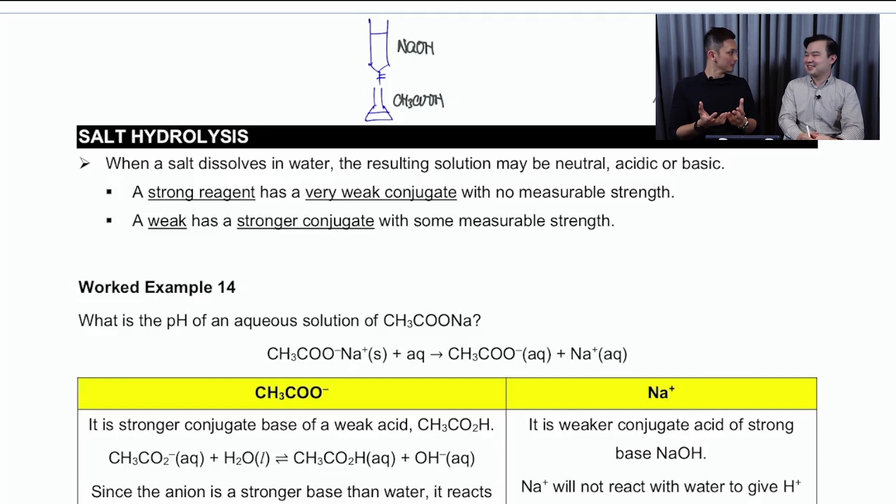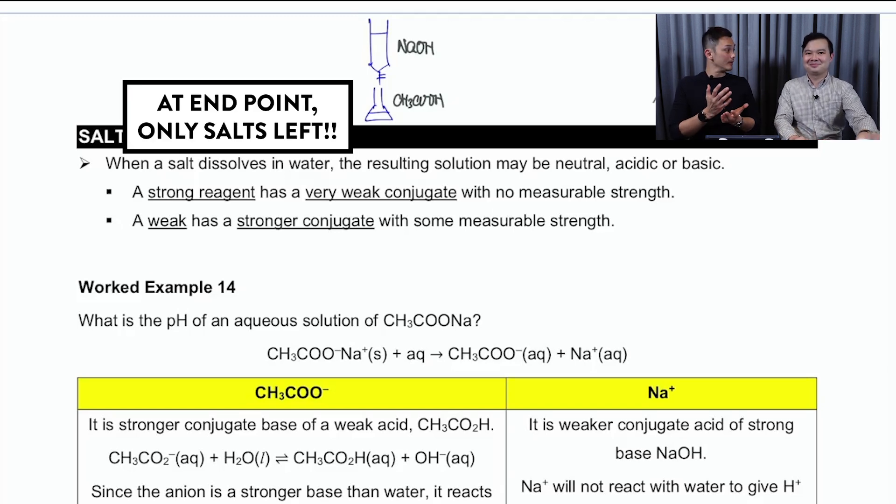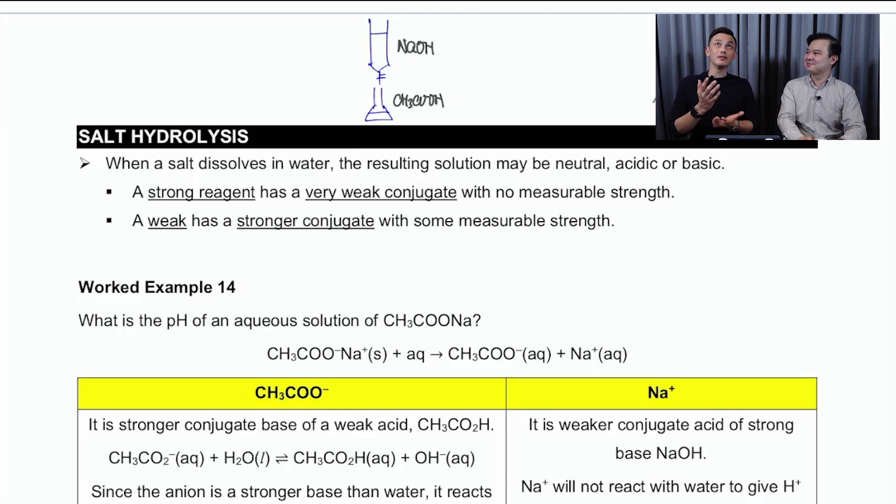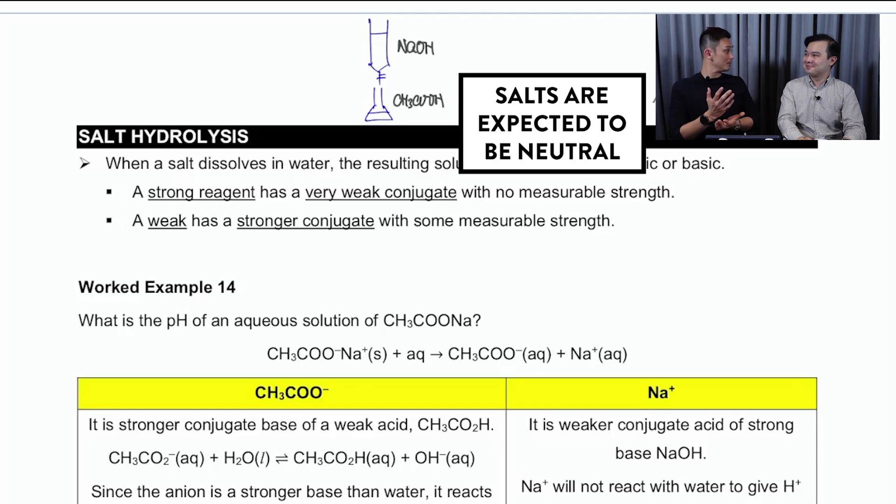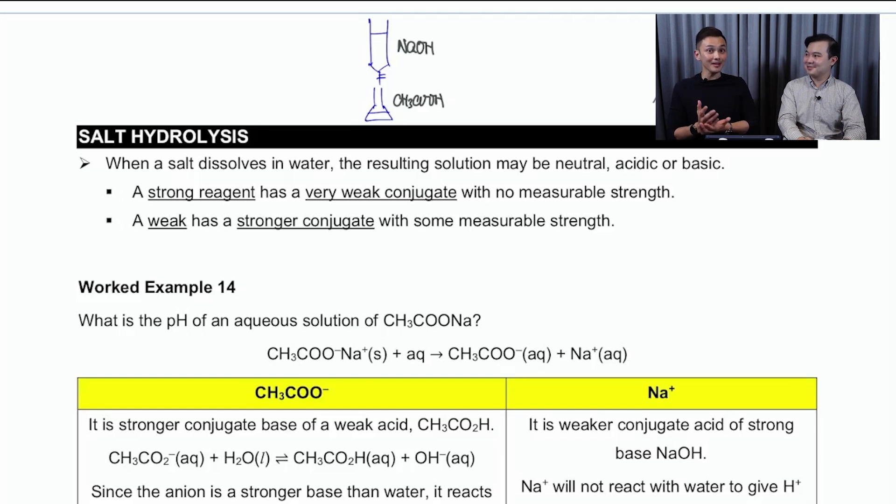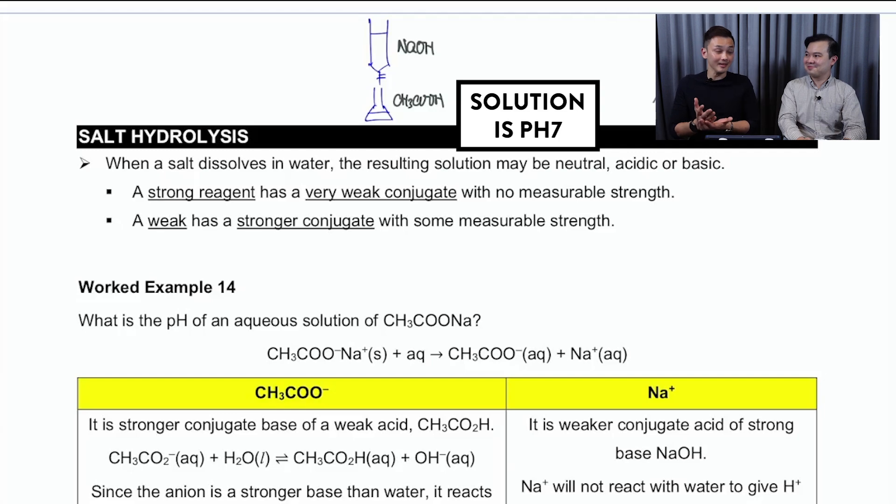So at the end point or equivalence point, you're saying that the number of moles of base should be the same as the number of moles of acid. That means at that point, there's only going to be salts left. And if there's only salts left, salts are expected to be neutral. Therefore, I would think that the pH of the solution is 7, isn't it? Okay, so let's take a look. We're going to see whether this is true.